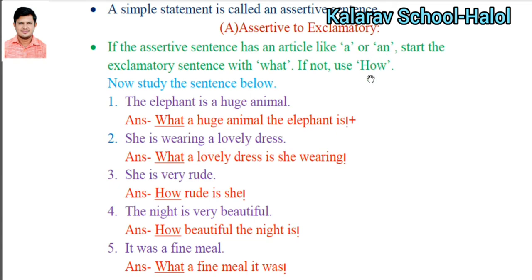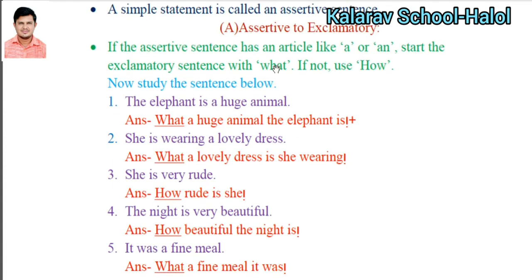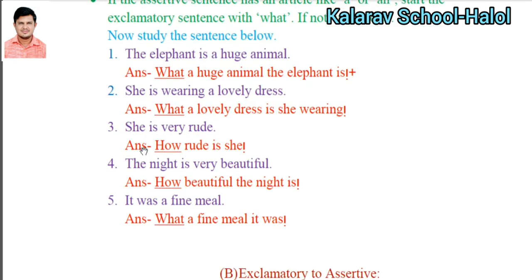Here are some examples. 'The elephant is a huge animal' — 'a' is an article, so it starts with 'what': 'What a huge animal the elephant is!' 'She is wearing a lovely dress' — article 'a' is there, so it starts with 'what': 'What a lovely dress she is wearing!'